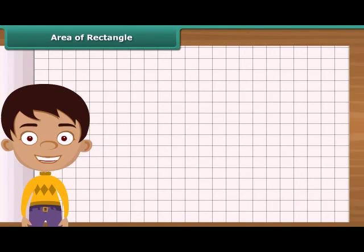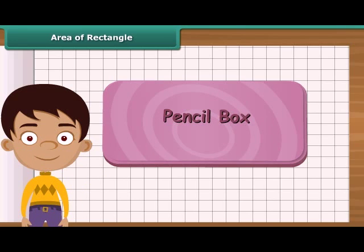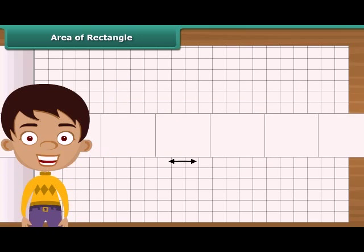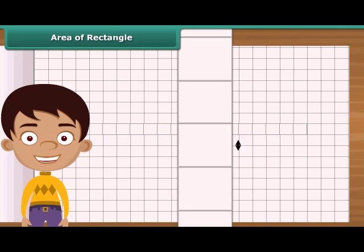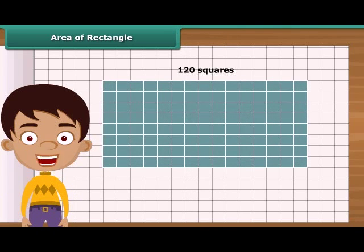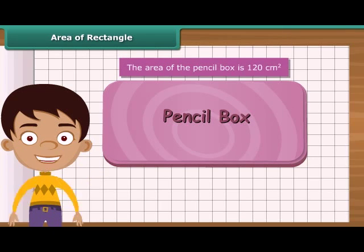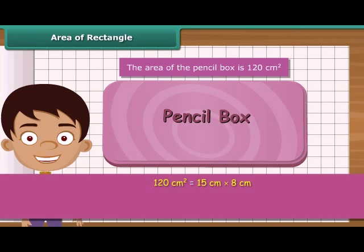Let us find the area of a rectangle by counting squares. Take a rectangular pencil box and place it on squared paper. The length of the box is 15 centimeters — arrange 15 squares of side one centimeter along its length. The breadth of the box is 8 centimeters — arrange 8 squares of side one centimeter along its breadth. Altogether, 120 squares have been arranged on the squared paper, so the area of the pencil box is 120 square centimeters, which is 15 centimeters multiplied by 8 centimeters.